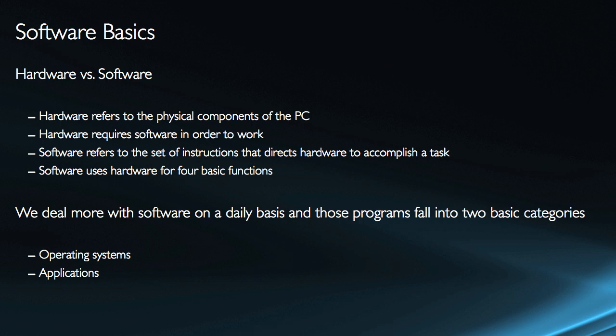Software uses hardware for four basic functions: input, output, processing, and storage. We deal more with software on a daily basis than we do with hardware. Software falls into two major categories: operating systems and applications.